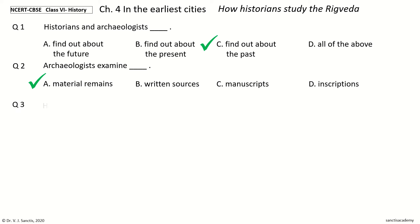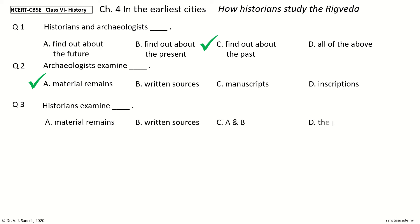Question 3. Historians examine — the options are: material remains, written sources, A and B, or the present. Your time to choose. And the answer is A and B. So, historians examine material remains and written sources.